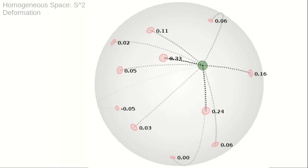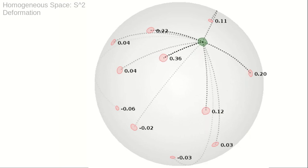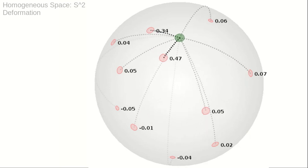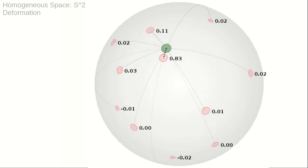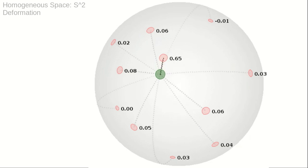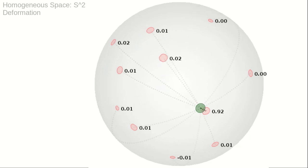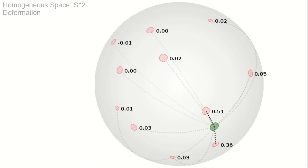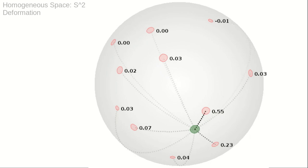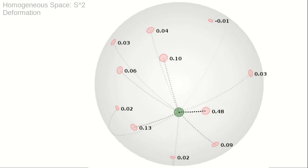Our coordinate construction also works in certain homogeneous spaces, for instance the d-dimensional sphere and the space of symmetric positive definite matrices. Lie groups are a subset in the set of homogeneous spaces.